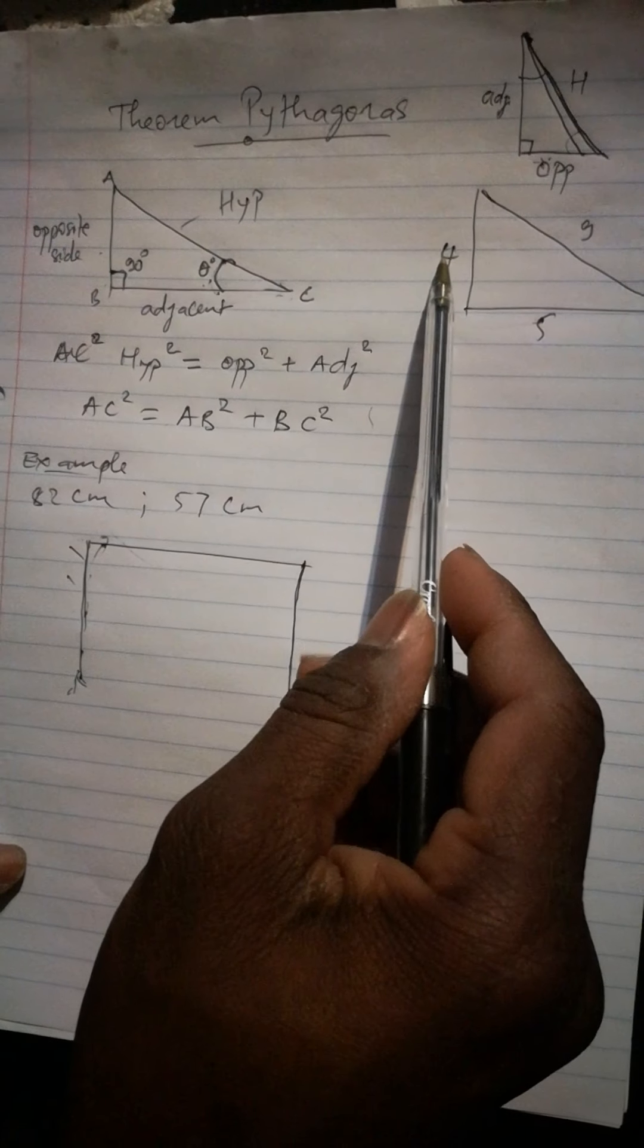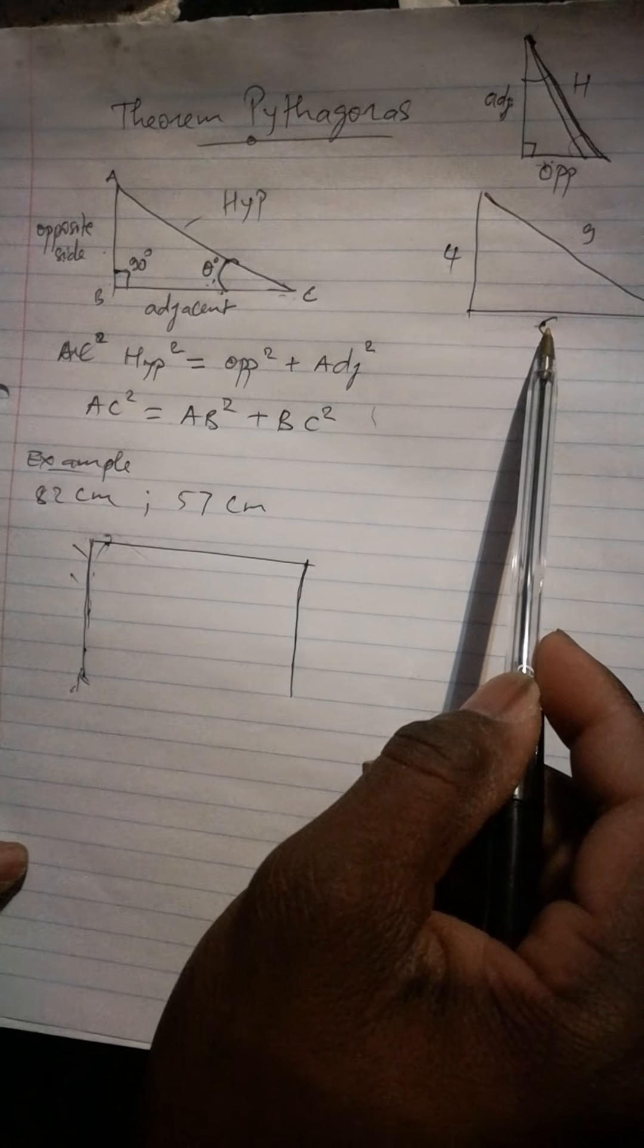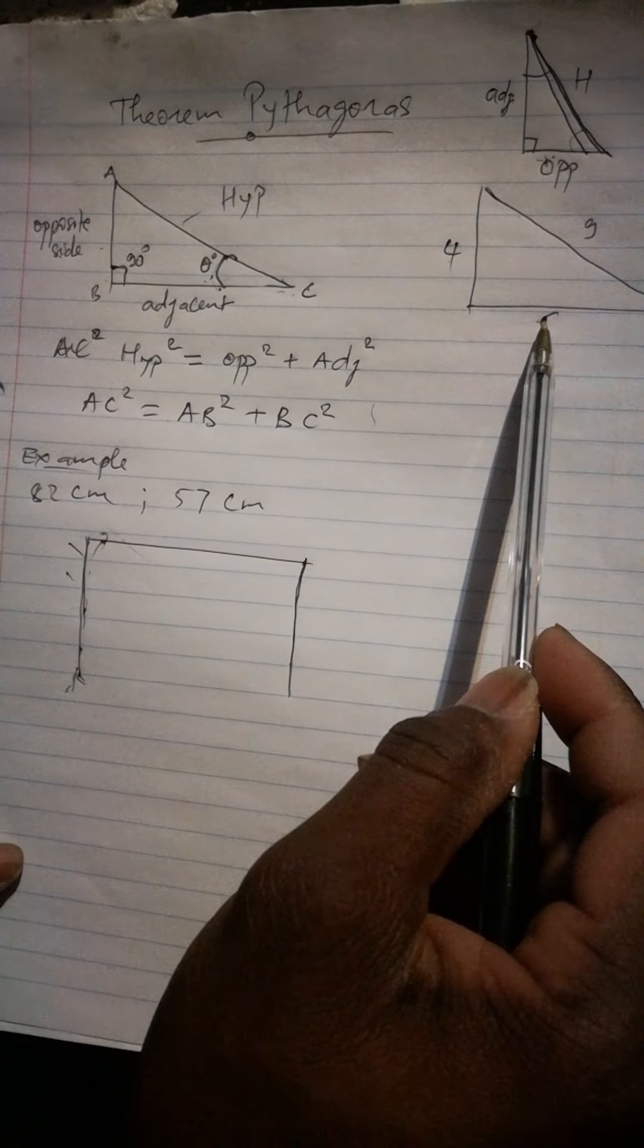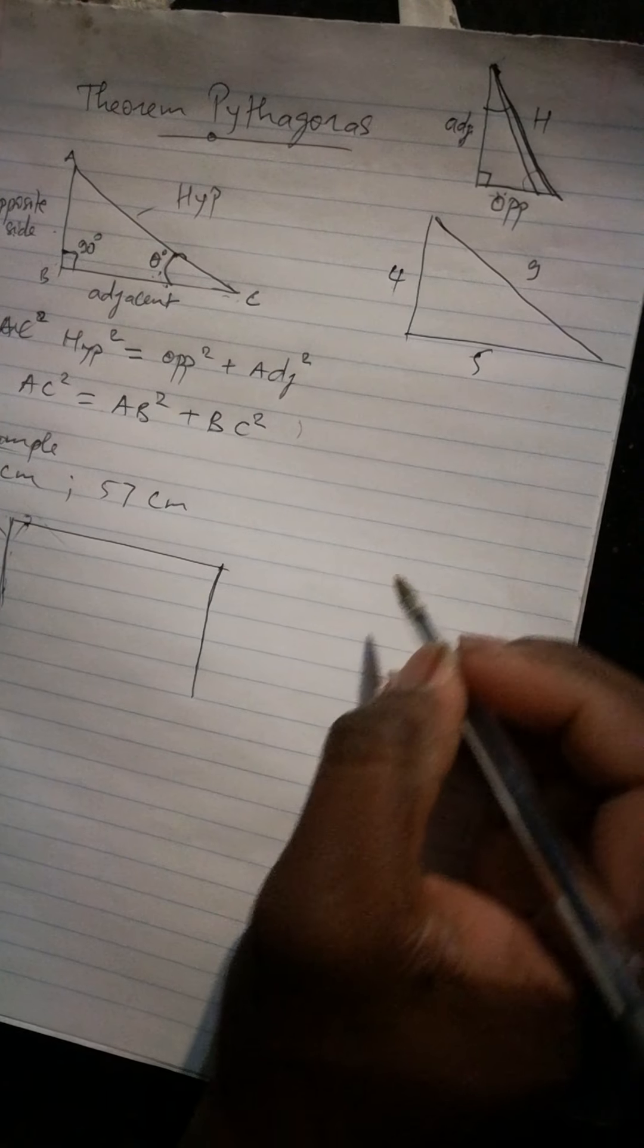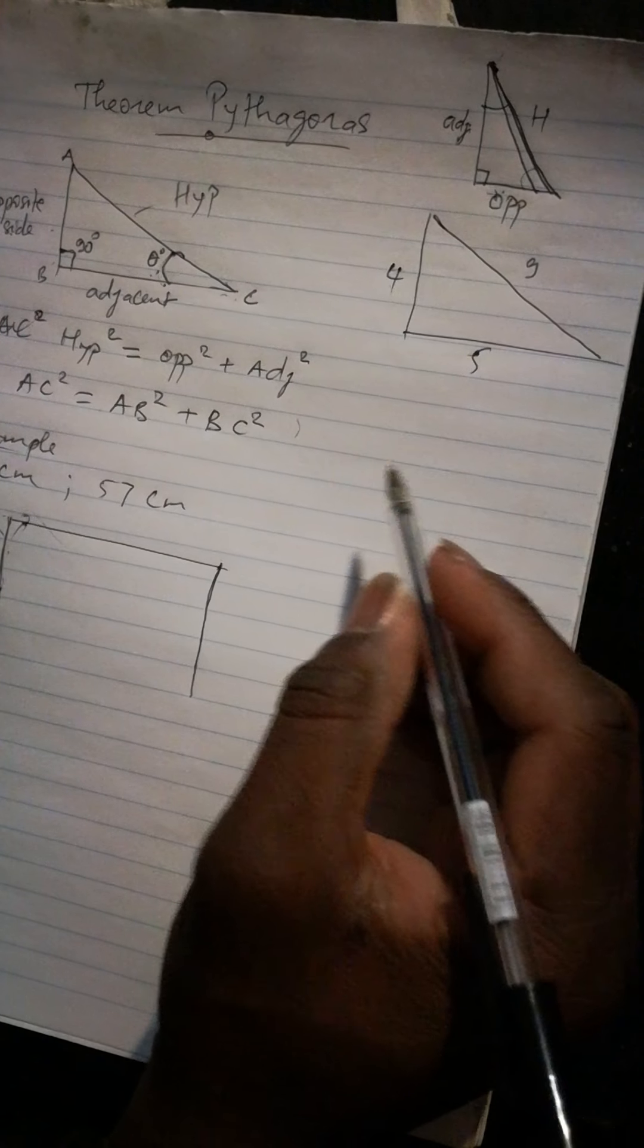We have 4, this is our opposite side, and 5, this is our adjacent side. Now here we can see, if they ask us to find the hypotenuse.